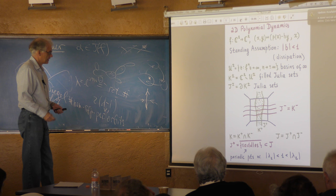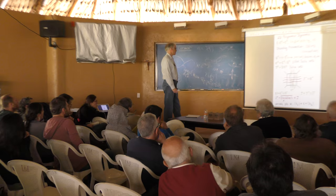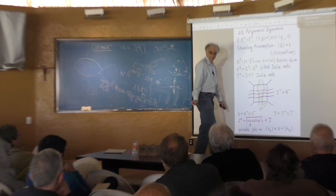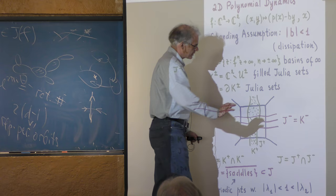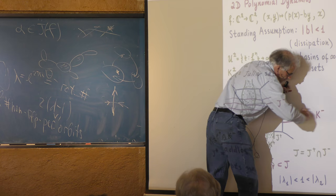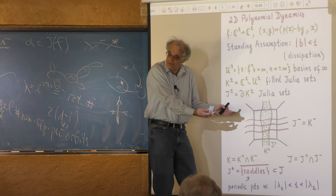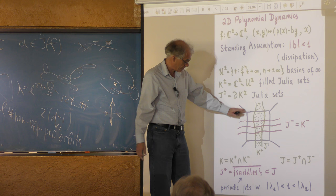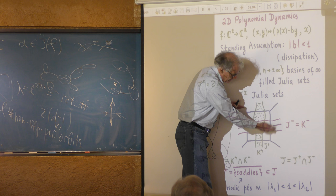Regarding the question about the blue curve in the schematic picture: it is just some bidisc — it does not have much dynamical meaning. It is known that in the sector outside this bidisc, orbits escape to plus infinity or negative infinity near infinity.